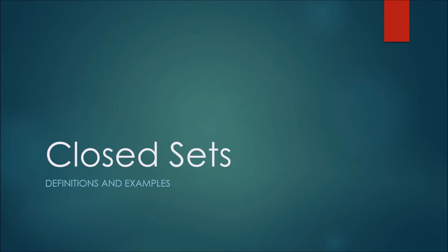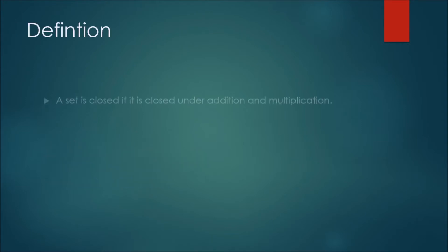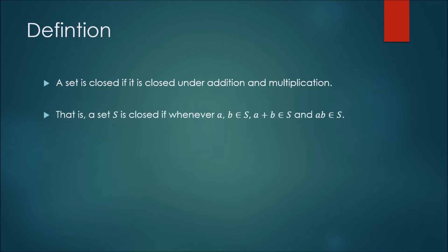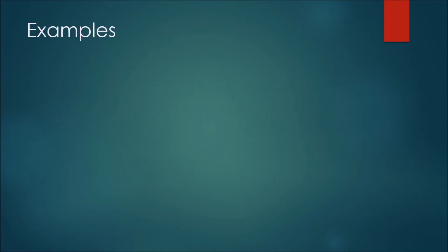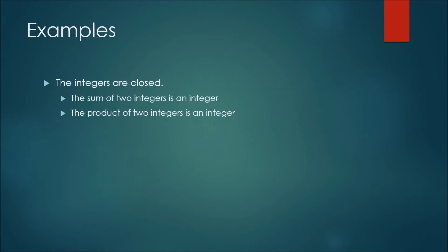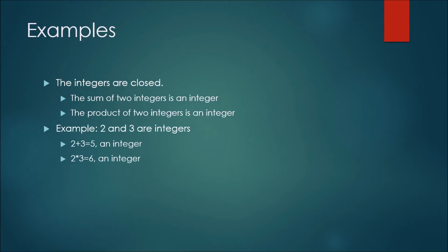Today we're going to talk about closed sets. A set is closed if it's closed under both addition and multiplication. For example, if we think about the integers, if we take two integers and add them together we're going to get an integer, and if we multiply two integers we're also going to get an integer.